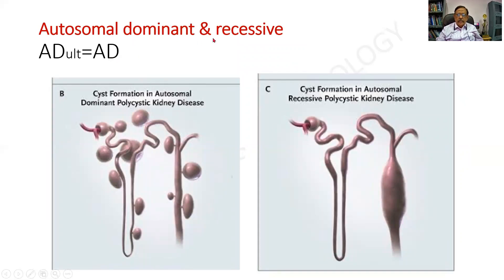There are two types. One is the autosomal dominant — the adult type — and the other is the autosomal recessive. Remember: AD adult equals autosomal dominant. Cysts arise from the tubules throughout the nephron — the descending limb, the loop of Henle, the ascending limb or the collecting duct — resulting in variable lining. In the infantile or recessive polycystic kidney disease, it is mostly restricted to the collecting duct.